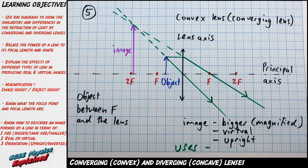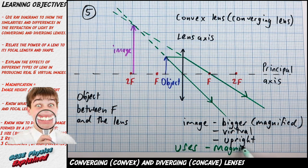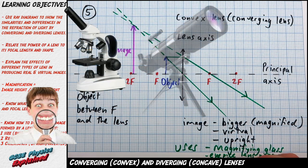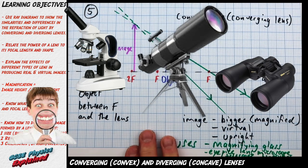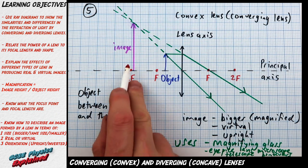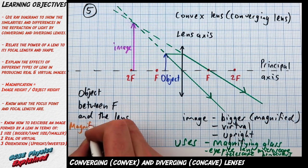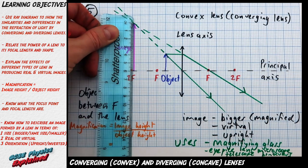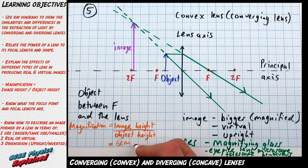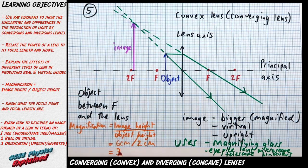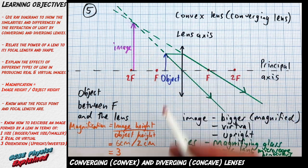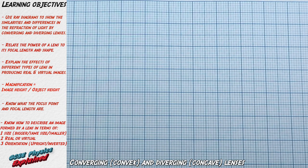Uses of this lens: magnifying glass, or the eyepiece lens of a microscope, or a telescope, or binoculars. Now if you had to work out the magnification, you just do the image height divided by the object height. So in this case the image height is six centimeters and the object height is two centimeters. Six divided by two is three, and the centimeters cancel out by the centimeters. Whenever you're doing the magnification it's got no units. We usually measure the image in centimeters or in millimeters, and the same for the object. So that's the five ray diagrams for the convex lens.